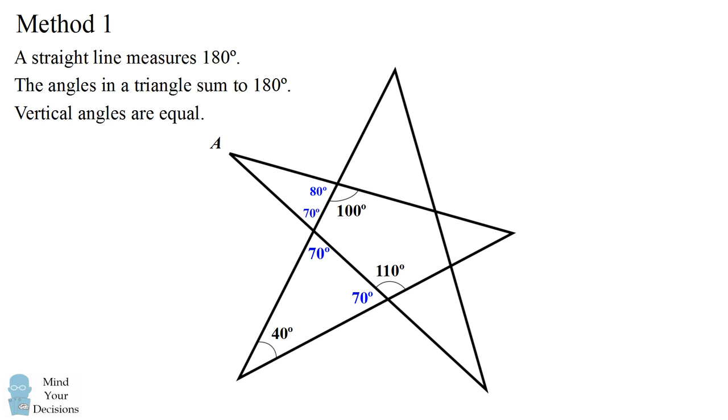And finally, we again use the principle that the three angles in a triangle sum to 180 degrees. This means angle A is equal to 180 minus 80 minus 70 and therefore angle A is equal to 30 degrees. So that's our answer, 30 degrees.